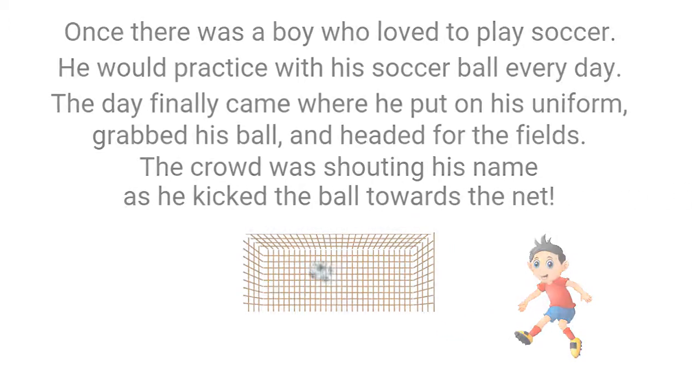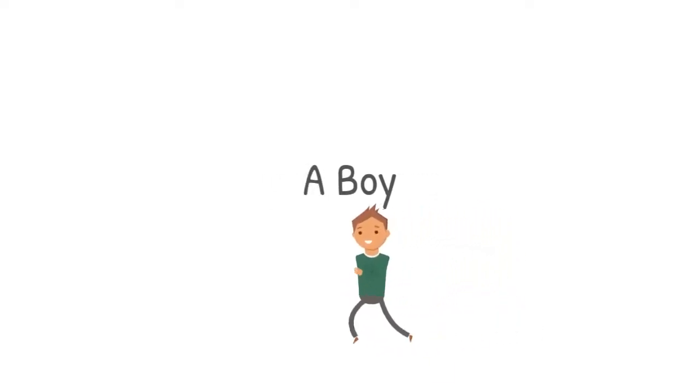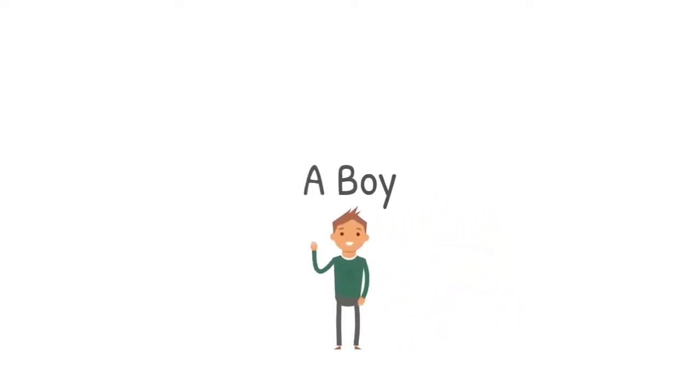What a great story! Let's ask some questions about it and see if we can find some answers. Who was in the story? That's right — a boy. We can go back in our story and read the first sentence to discover who was in the story: once there was a boy.